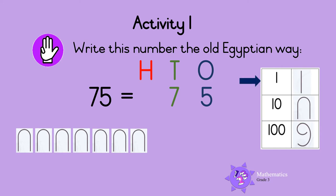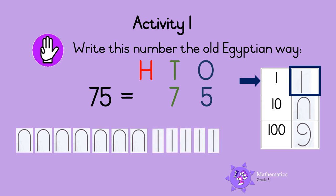Here is the symbol used for one. There are five ones in the number five, so we need five of these symbols: one, two, three, four, five. So now we have the number 75. This is how you write 75 in old Egyptian. Well done!